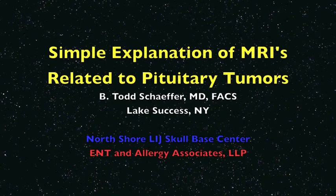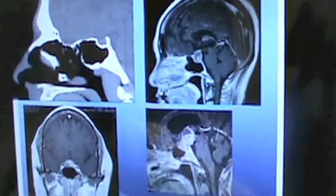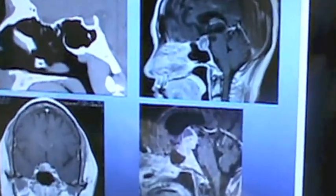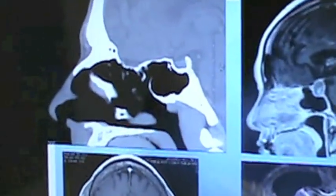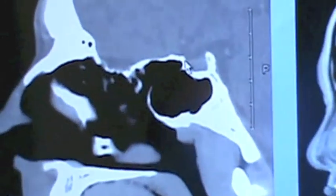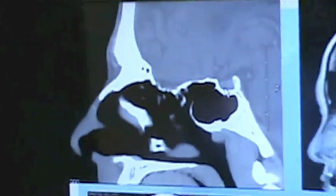The following is a simple explanation of MRIs related to pituitary tumors. This is the side view of the nose. This is the sphenoid sinus. This is the normal pituitary gland — you can see the gland right there. It's about the normal size.